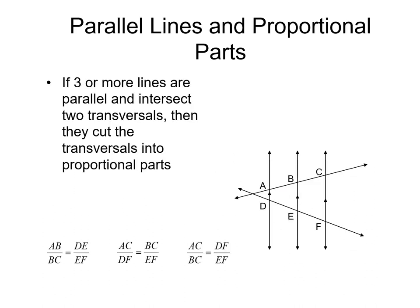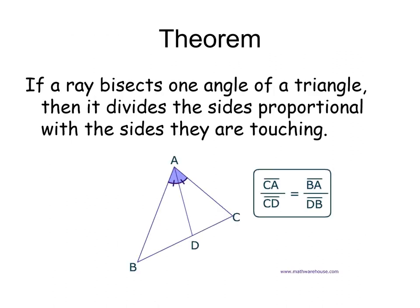We elaborate more. If three lines are parallel and intersect two transversals, then they cut into proportional segments. Otherwise, if a ray bisects one angle of a triangle, then it divides the opposite side proportionally with the sides they are touching.